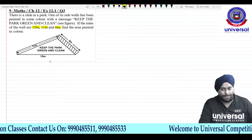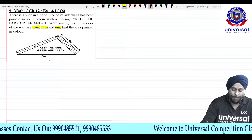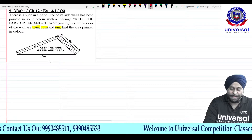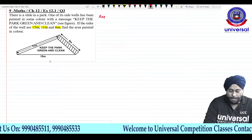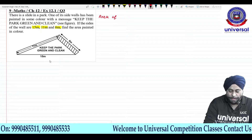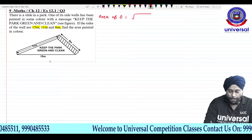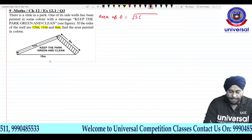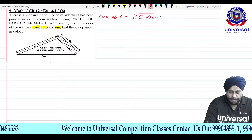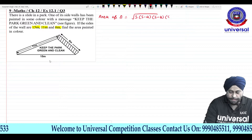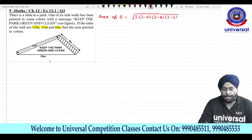Find the area — all three sides are not equal, so it's clear we'll apply Heron's formula. Before I start, I'll write down Heron's formula. Area of a triangle using Heron's formula comes out to be under root of S(S−A)(S−B)(S−C). This is the area of a triangle by Heron's formula.